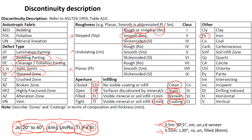In the detailed example, at 3.5 meters depth there is a bedding plane inclined at five degrees to the horizontal, with smooth undulating roughness, closed aperture, and a veneer — less than one millimeter of discoloring on the surface. Another discontinuity is a joint type inclined at 30 degrees with rough undulating surface, and the aperture is filled with material — we don't know exactly what the material is, but the filling thickness is eight millimeters.